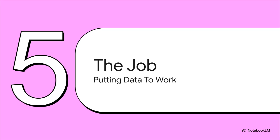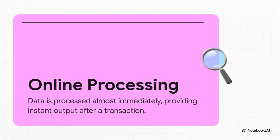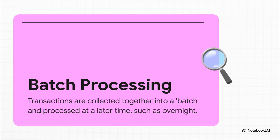Our data has been born, collected, secured, and cleaned up. It's passed every test with flying colors — now it's finally time for it to get to work. That purchase we made uses something called online processing. It happens almost instantly: in just a few seconds, the system processes your payment, confirms the order, and pings the warehouse to start packing your item. That instant feedback we all expect — that's online processing making it happen. But our transaction doesn't stop there. Later, probably at the end of the day, our purchase data gets tossed into a big digital pile with thousands of others. This is called a batch, and then the system processes that entire batch all at once, maybe overnight, to do things like generate sales reports. It's way more efficient, but definitely not instant.